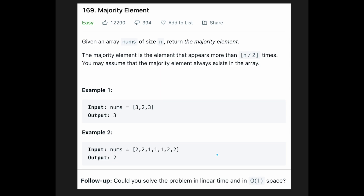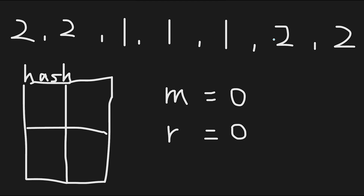I came up with two solutions. The first solution is linear time but O(n) space complexity. The second solution is linear runtime and O(1) space. I'll show you how to solve this question both ways. Let me explain with example 2. You may come up with a HashMap solution. Basically, I iterate through all values one by one, put each value into the HashMap, and then compare the count of the current value with the current majority count. If the count is greater, update the majority and result variable.